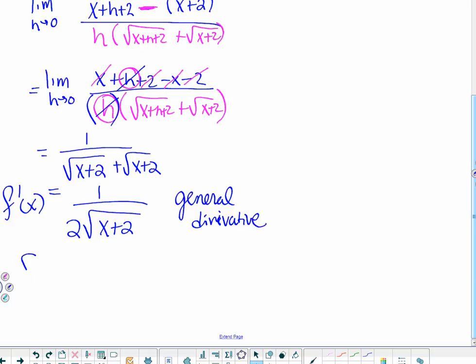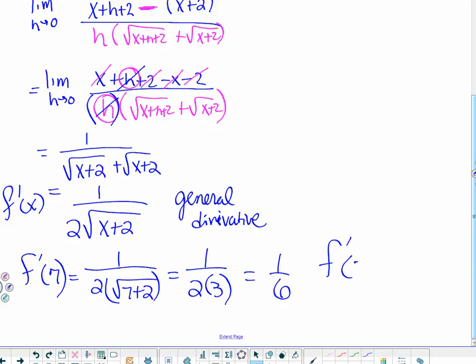They ask for f prime of 7, and I can simply plug in 7 where I had my x to evaluate this, and I get 1 over 2 times square root of 9, which gives us 1 over 6.